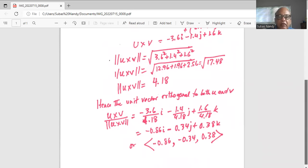So the directional numbers for the unit vector which is orthogonal to both u and v are minus 0.86, minus 0.34 and 0.38.